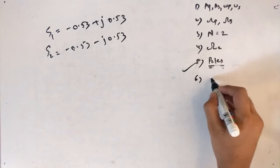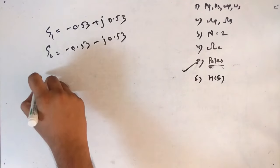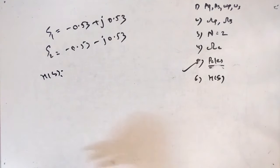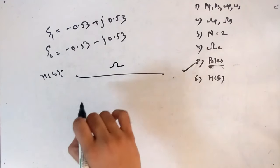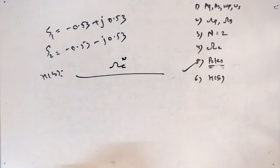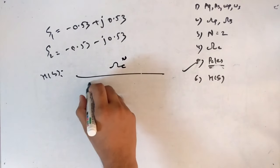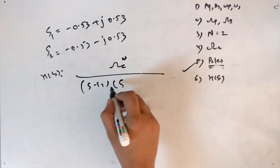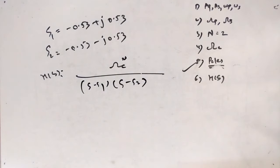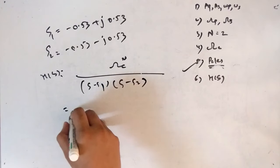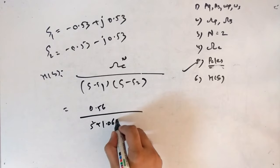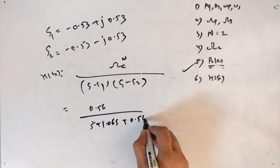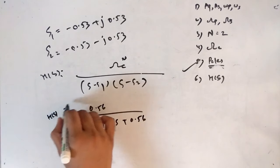The sixth point is to find the analog filter H(s). The formula is H(s) = Ωc^n / [(s − s1)(s − s2)]. Substituting the cutoff frequency and the selected poles, we get H(s) = 0.56 / (s² + 1.06s + 0.56). This is the analog Butterworth filter.